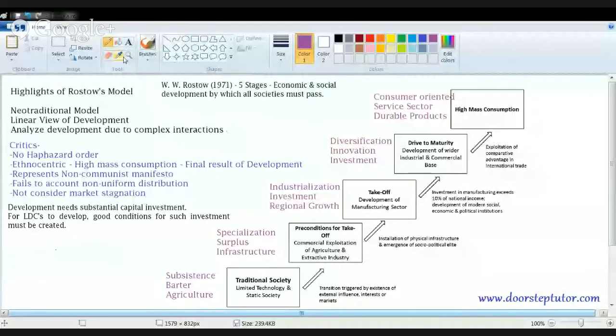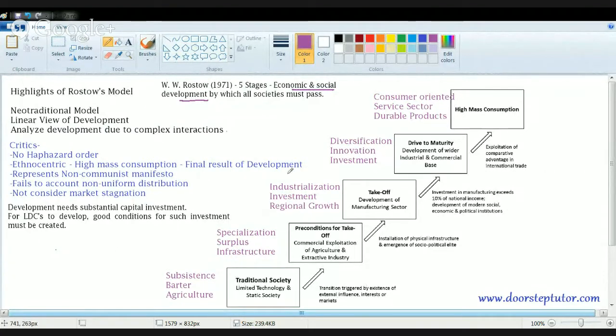Rostow basically talked about the hierarchy in which a nation or a country grows and each nation or each society must pass through the various developmental stages. These are basically economic and social development stages through which each society passes. Before we start about the details of Rostow's theory, let's first understand the five basic stages. So the name of these stages and order in which they flow is very important.